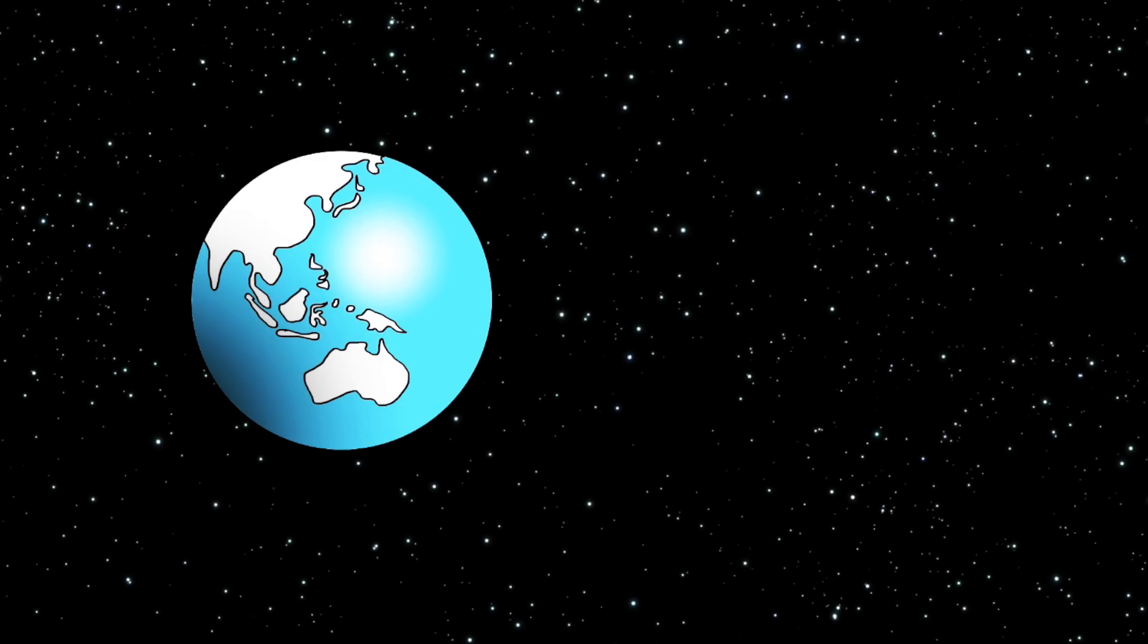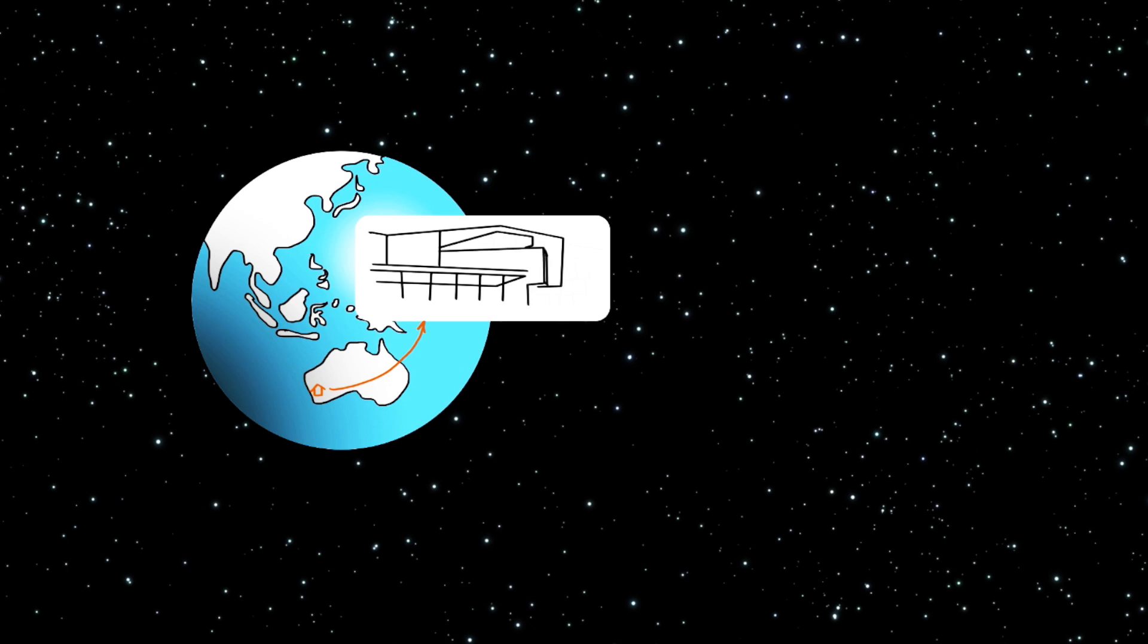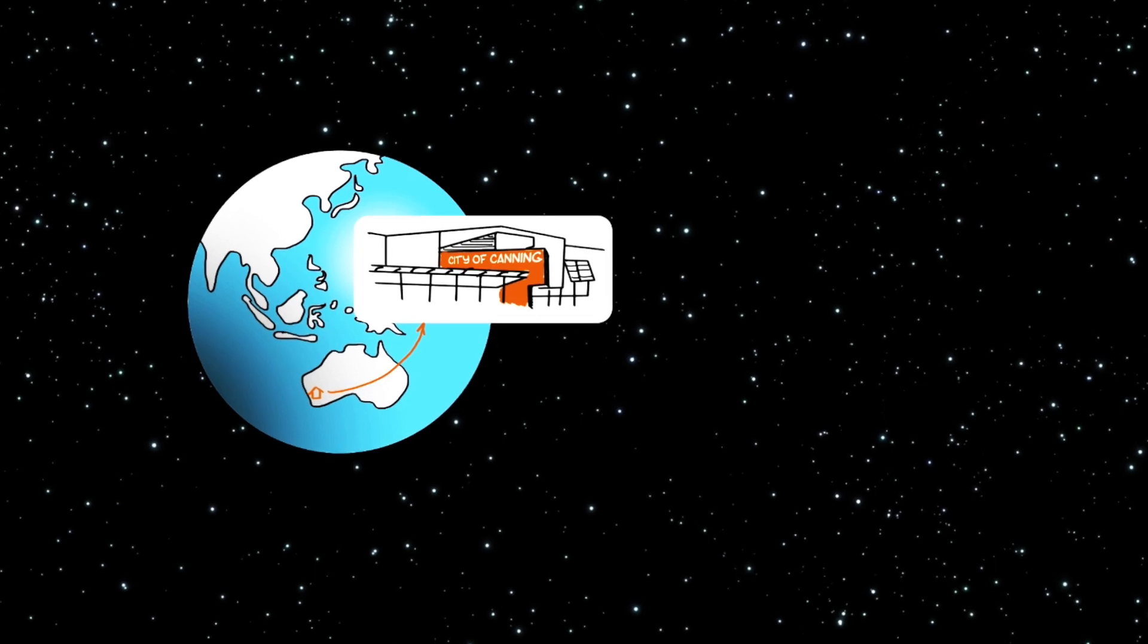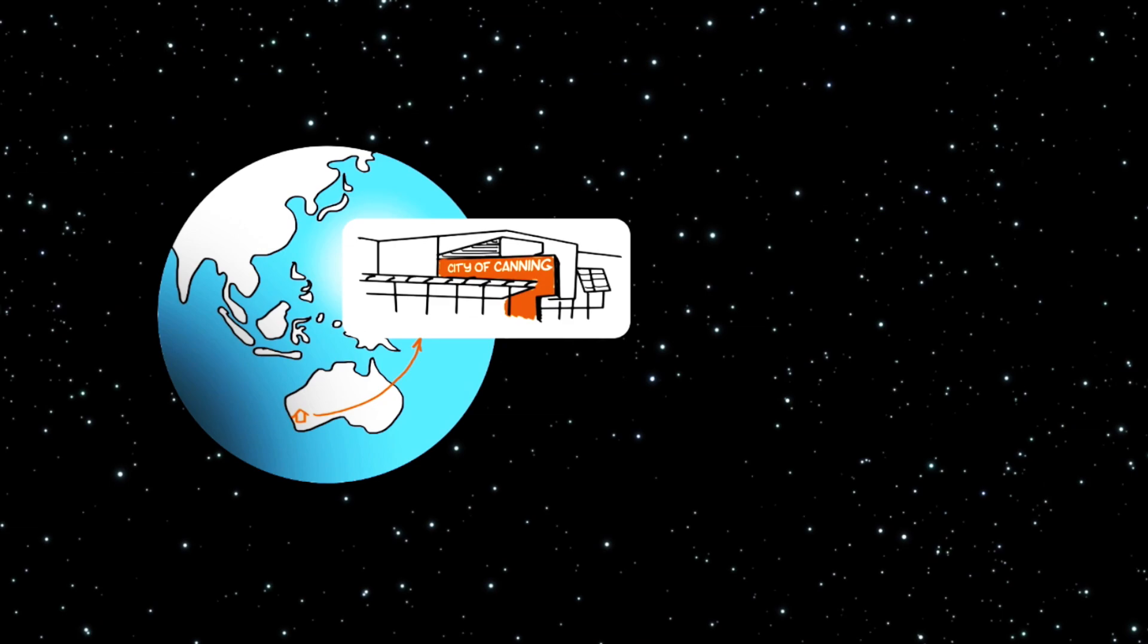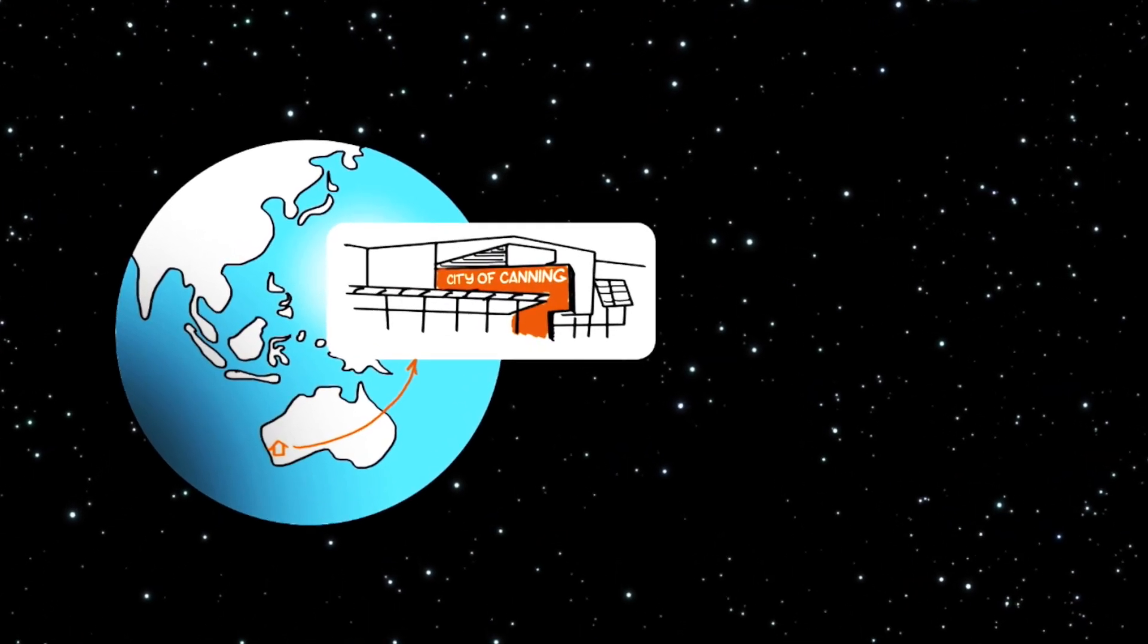This is a story about home, our home. It's a story about the city of Canning and our larger home planet Earth. It's a story about what we need to understand and how it works in order to live a good life now and into the future. Let's start at the beginning. Here in our solar system, we've got this great planet called Earth.